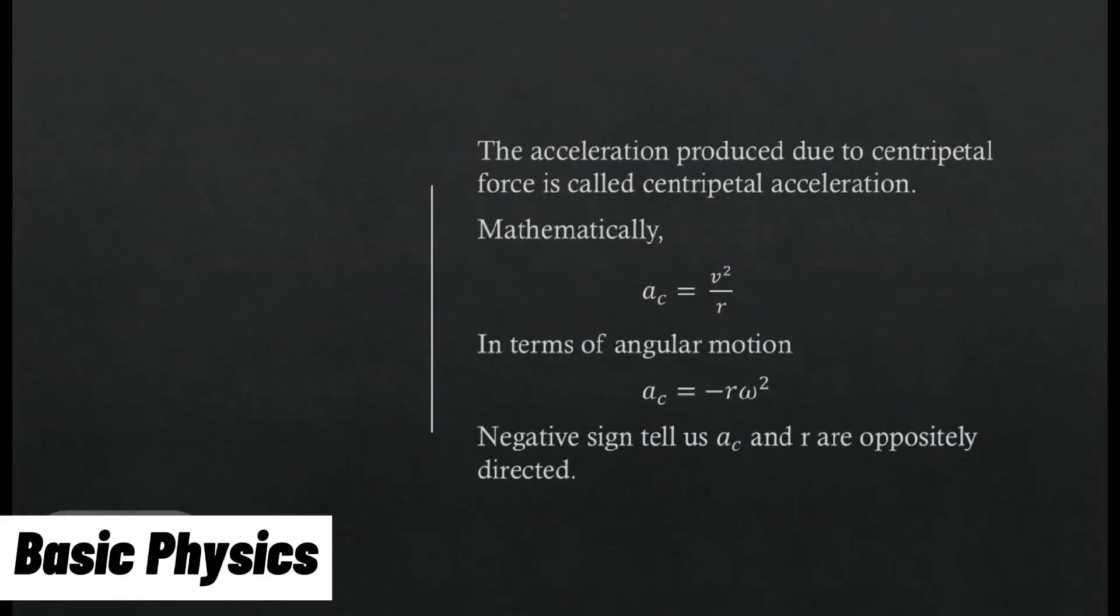The acceleration produced due to centripetal force is called centripetal acceleration. Mathematically, a = v²/r. In terms of angular motion, a = -rω². Negative sign tells us a and r are oppositely directed.